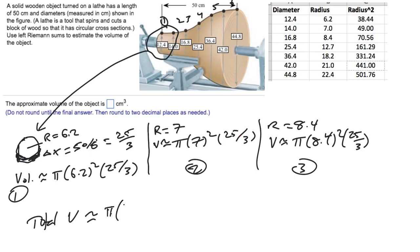So pi times 25 thirds times, and then it's just going to be the sum of this guy squared, this guy squared, this guy squared, and so on. So 6.2 squared plus 7 squared plus 8.4 squared. And I'll read off more table values: 8.4 squared, 12.7 squared, 18.2 squared, 21 squared.